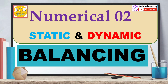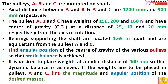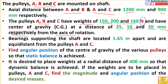Hello my dear friends, in this lecture we are going to solve a numerical on static and dynamic balancing. The numerical involves pulleys A, B, C. The distance between A and B, and A and C, is given as 100 and 900 millimeters respectively. Pulleys A, B, C have weights given in Newtons, with center of gravity at distances of 25, 10, and 20 millimeters respectively from the axis of rotation. Bearing supports for the shaft are located 1.65 meters apart.